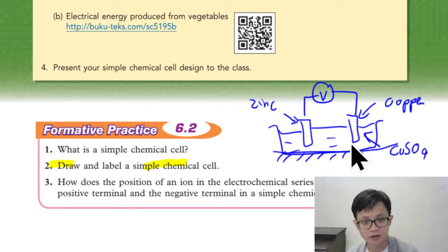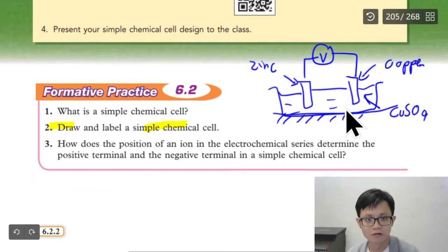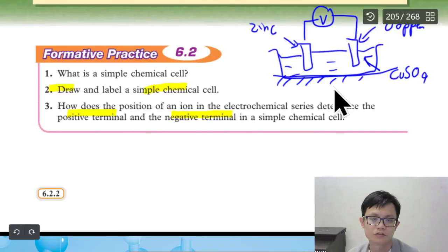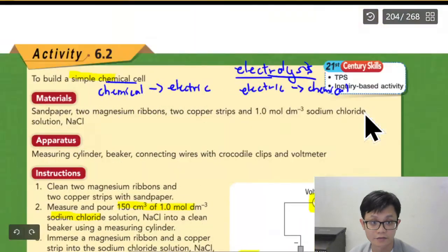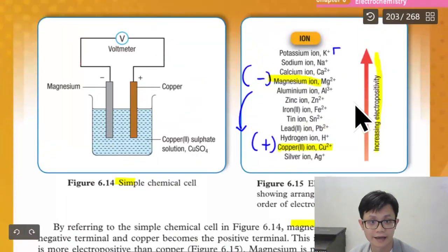The question usually will ask you: How you know which one is positive and negative. So we can see from here zinc and copper. Which one is more negative. We look at the picture. The higher is it, the negative. So copper is down.